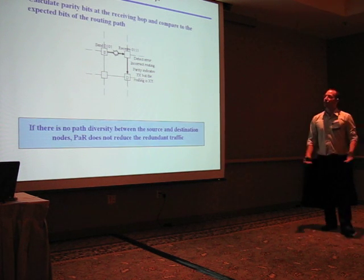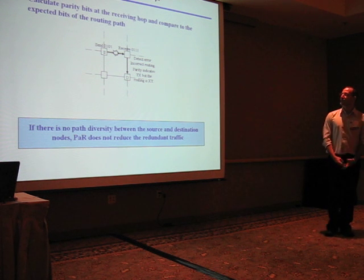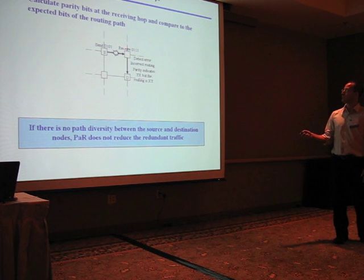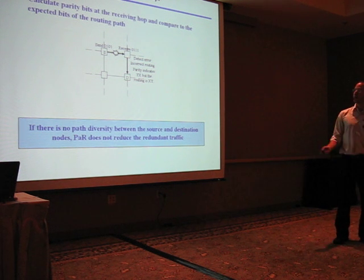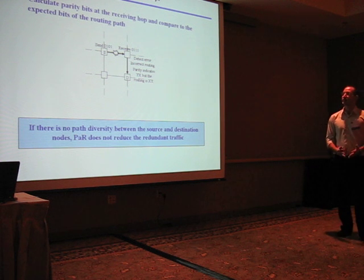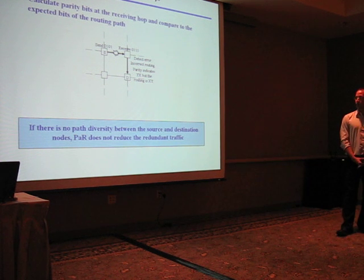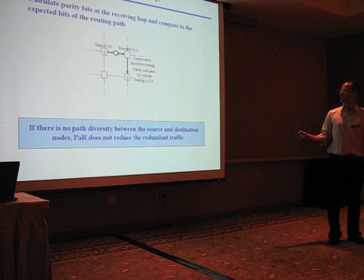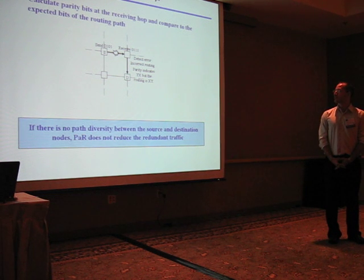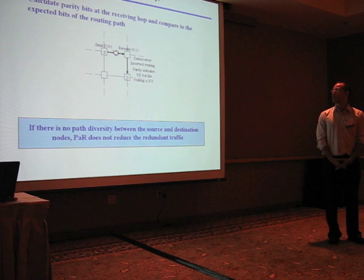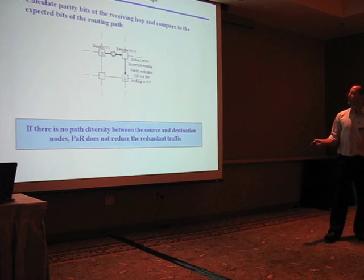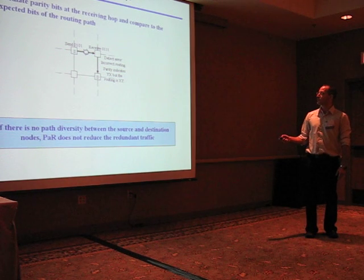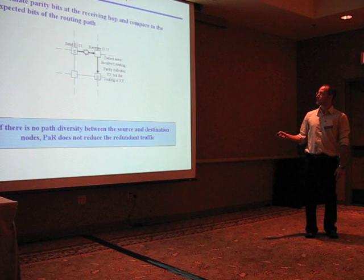How is the decoding done? We calculate the parity bits at the receiving node and compare to the expected bits of the routing path. For example, we have four bits: zero, one, zero, one, and the parity bit here equals zero, which will indicate XY routing.